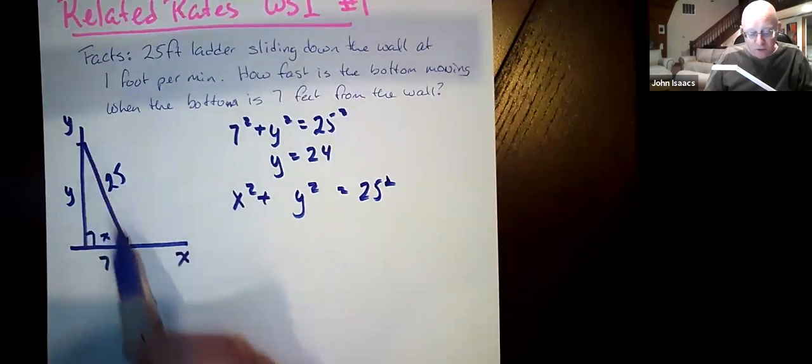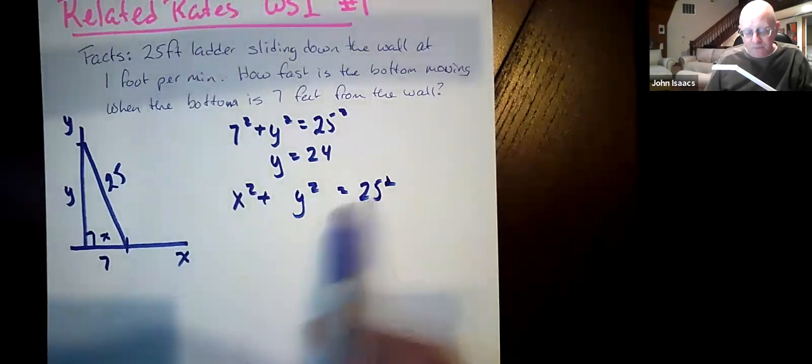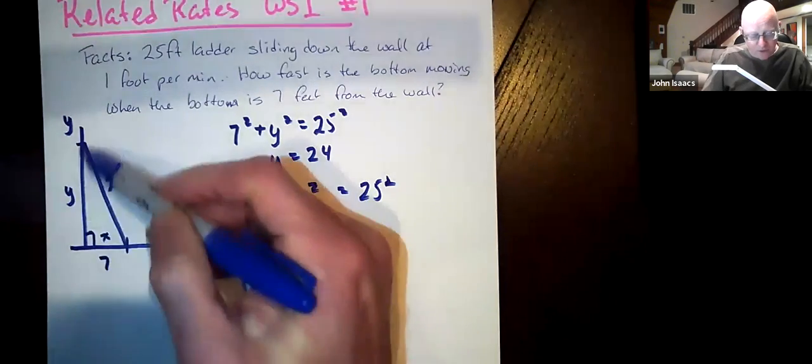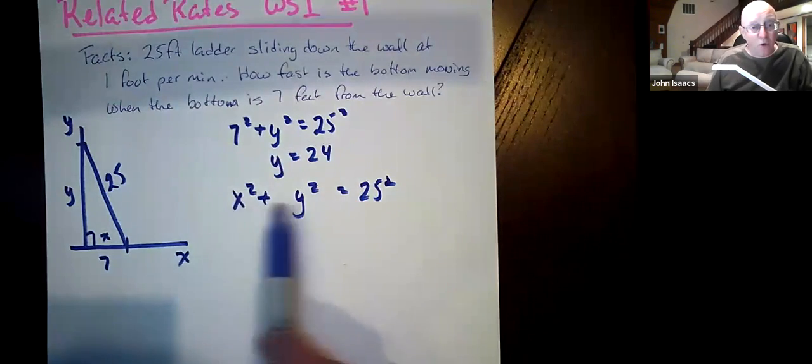And we know that the 25 squared, the length of the ladder is not changing. So that does not need to be a variable, but x and y, the lengths, the distance that the ladder is away from the wall, the distance that the ladder leans against the wall at, are going to vary. So those need to be variables.